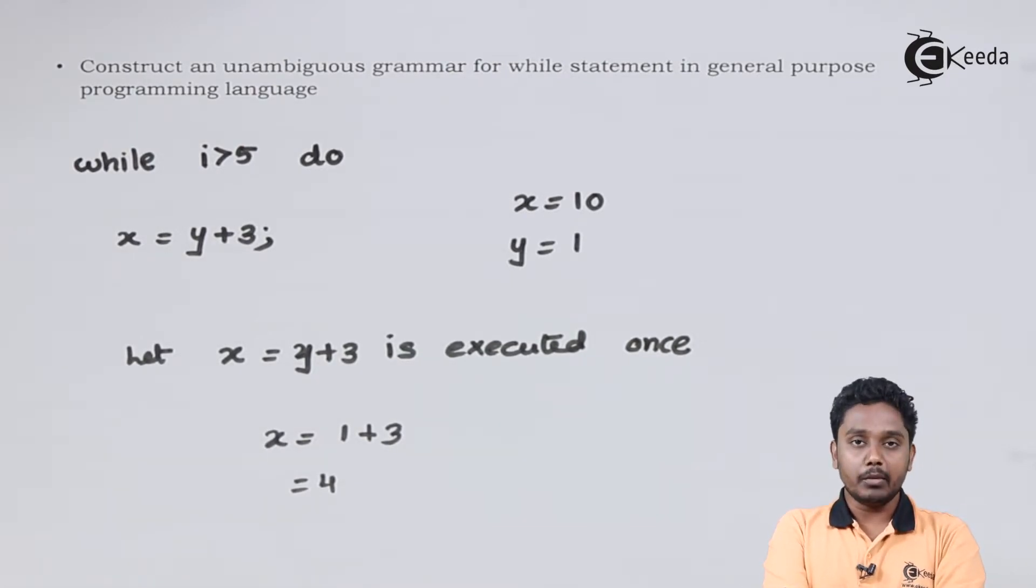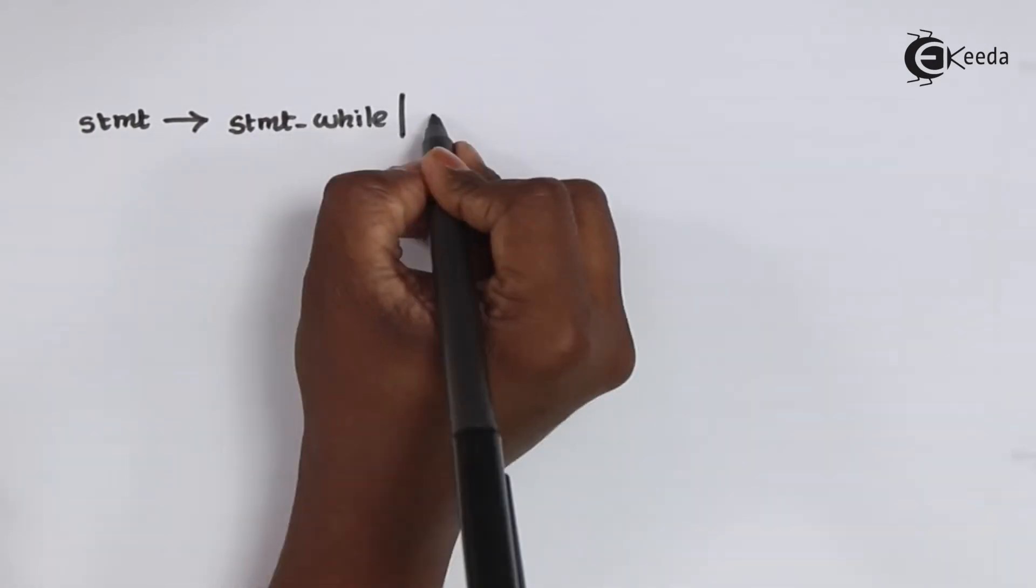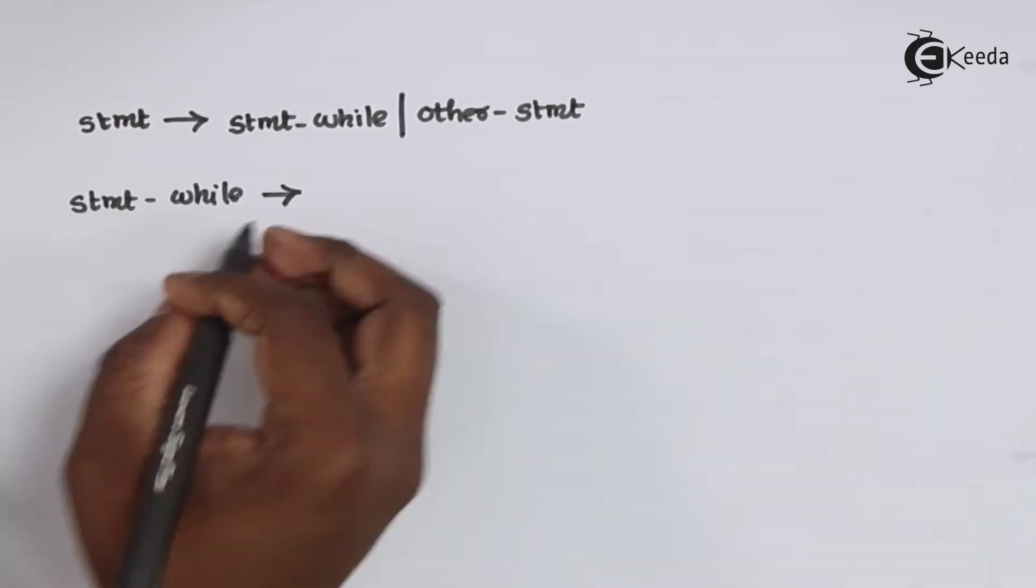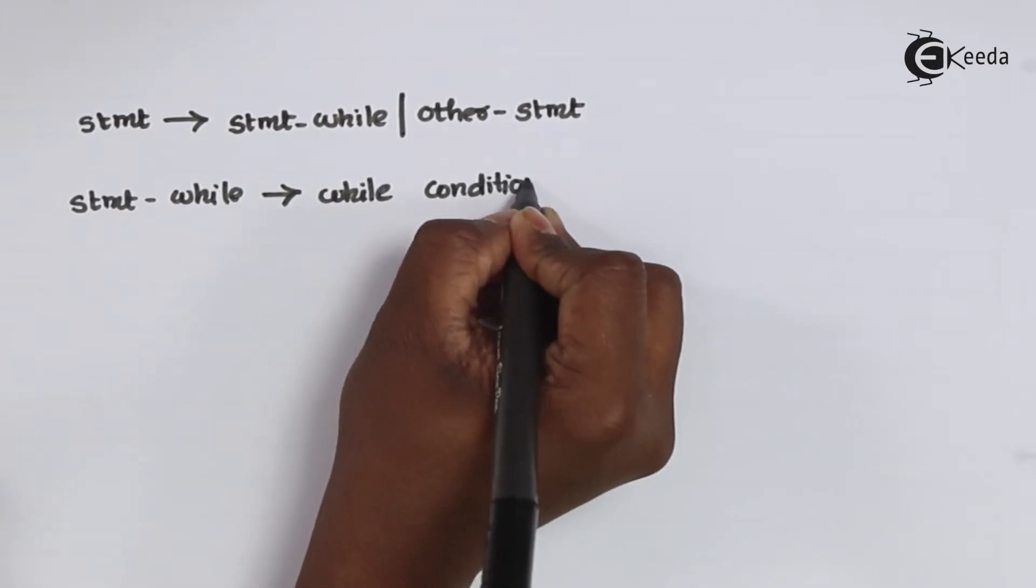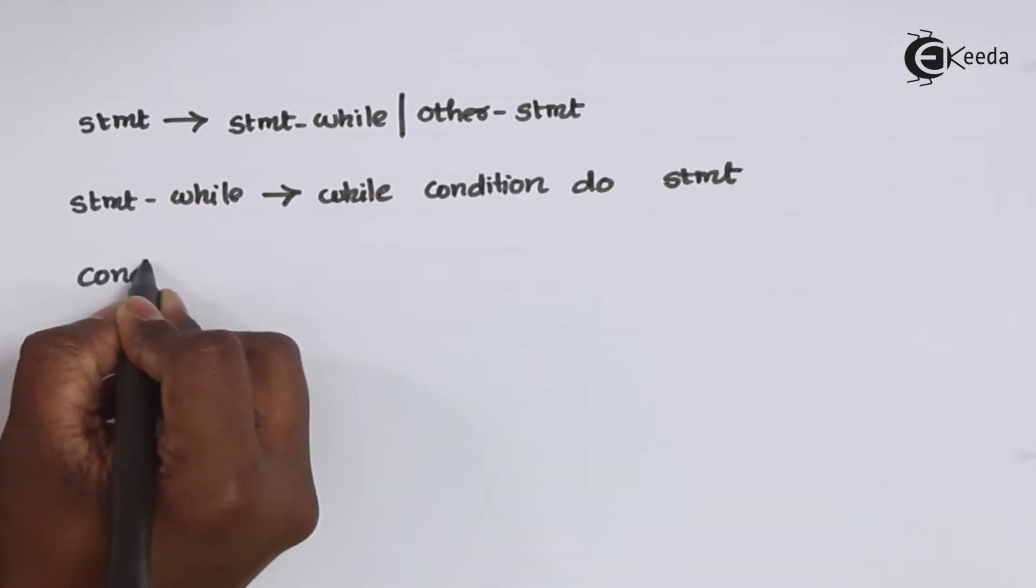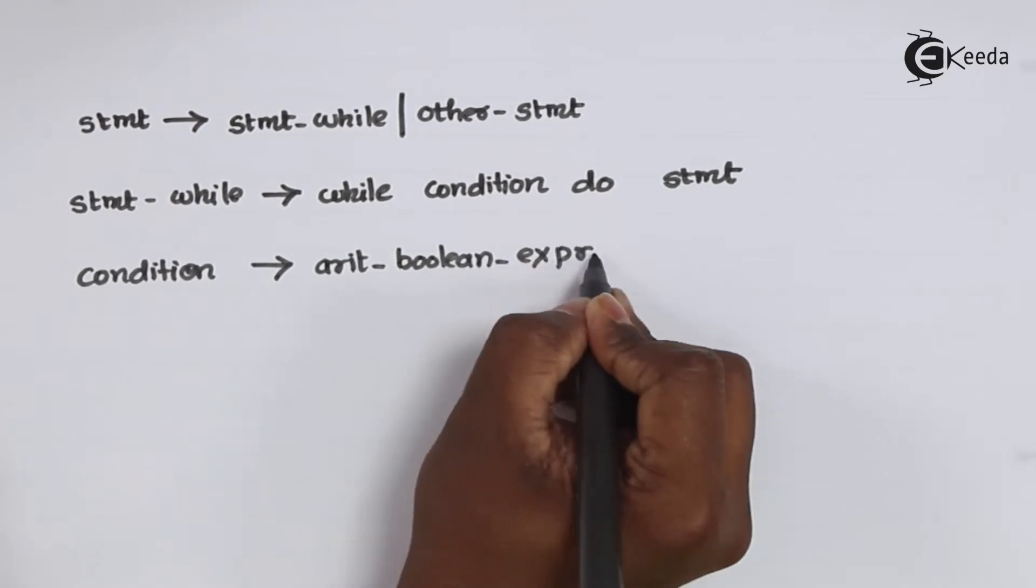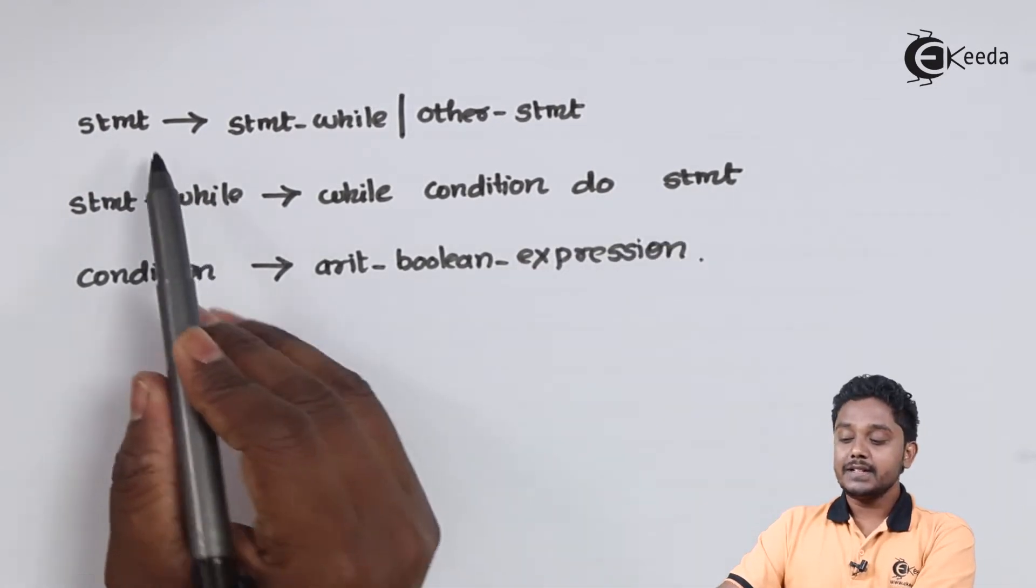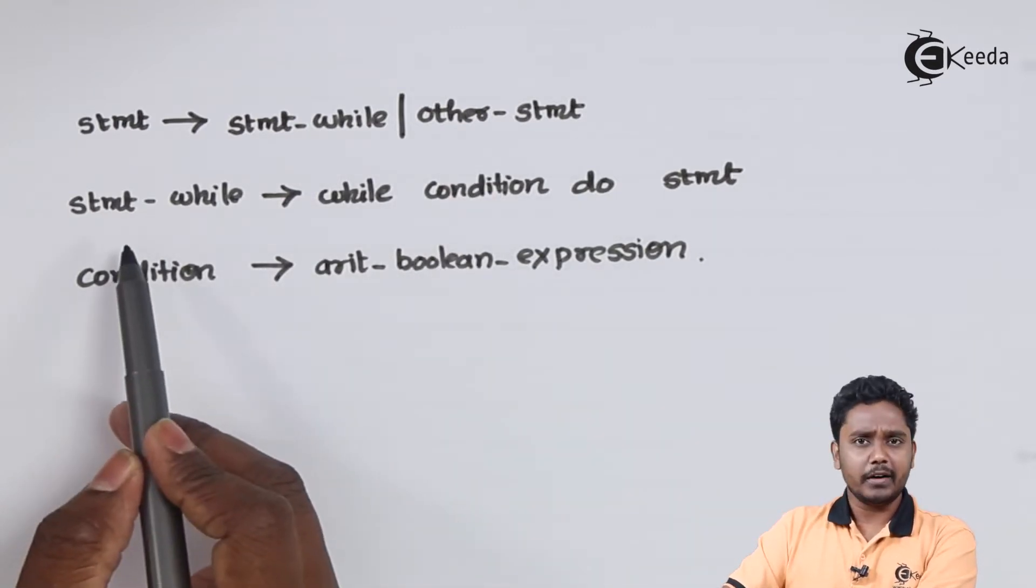Now we need to write a grammar which represents this particular while construct. In this grammar, we can see that statement is either a while statement or some other kind of statement. If it is a while statement,